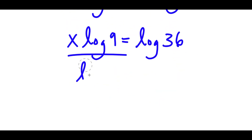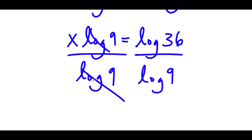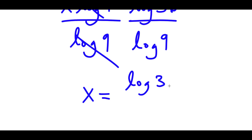Now, if I divide both sides by log 9, these two cancel out. And I get x is equal to log 36 over log 9.